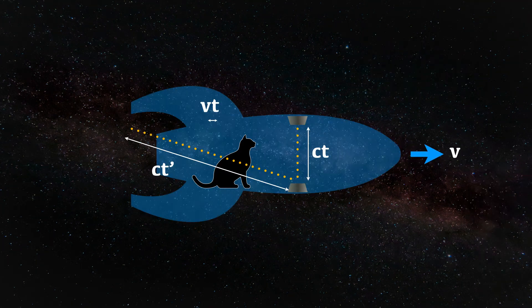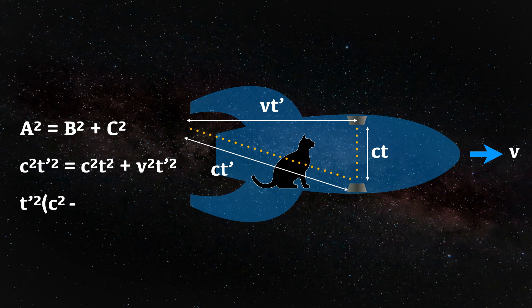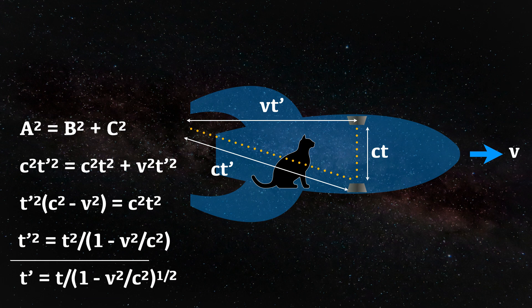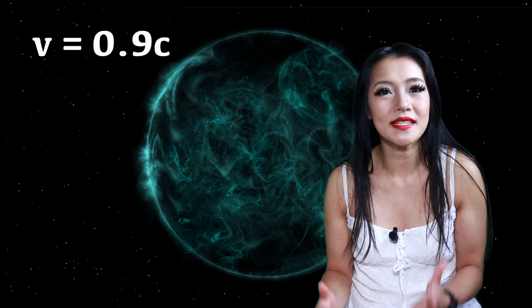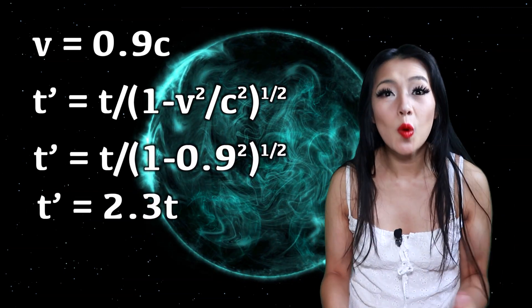But exactly how fast? Well, let's calculate it. We know the distance travelled by the rocket is the velocity of the rocket times T prime. This gives us a triangle of distances. Using Pythagoras' theorem for triangles, we can write the following. And with a bit of rearranging, you'll get this. Congratulations, we've just derived Einstein's time dilation equation. This equation basically tells you that the faster you move, the slower your time will be. For example, let's say your rocket is travelling at 0.9 times the speed of light — you'll find that time passed by a stationary observer is more than twice the time of the traveller.